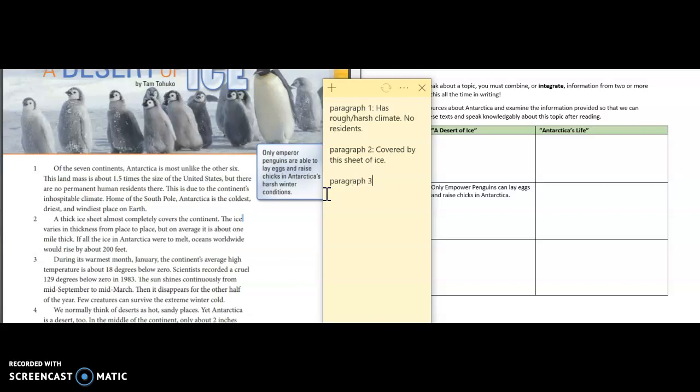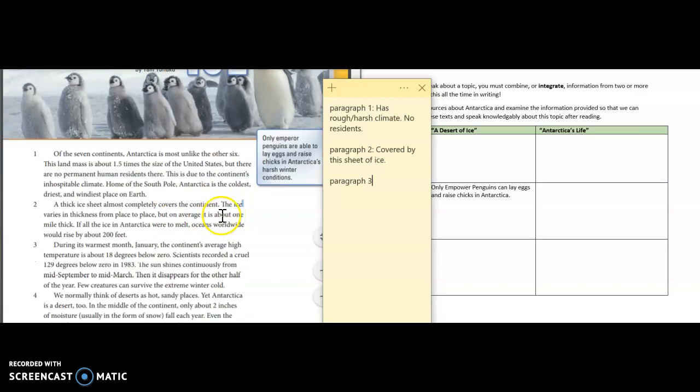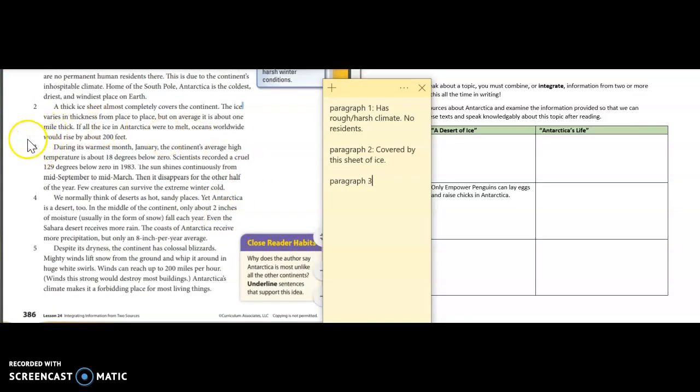Paragraph three: I haven't really heard any more about animals and I certainly haven't read anything about plant life, so let's continue. During its warmest month, January—that's kind of strange, we think here it's pretty cool in January and that's its warmest month—the continent's average high temperature is about 18 degrees below zero. Scientists recorded a cruel 129 degrees below zero in 1983.